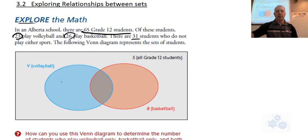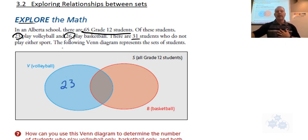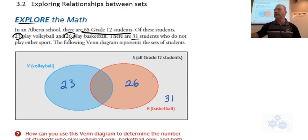23 play volleyball, so we'll put 23 there. Now, just hang on because we're going to have to make some adjustments. 26 play basketball, so that seems to be 26 in the basketball circle. There are 31 that don't play either, so they would go outside of those sets.